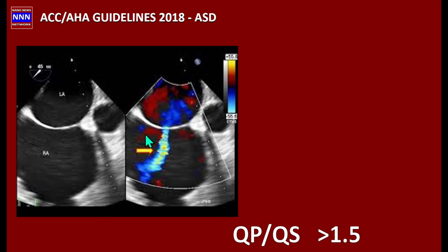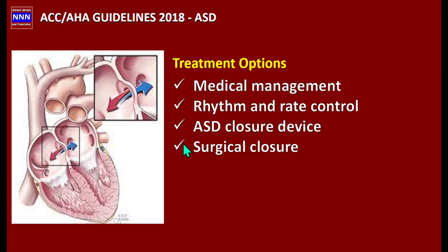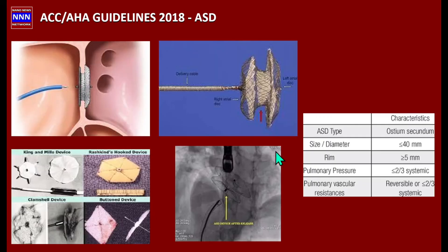Once we have this information — the Qp:Qs ratio and shunt velocity — the available treatment options include medical management (rate and rhythm control for atrial fibrillation, heart failure control, pulmonary hypertension management) and atrial septal defect closure by device or by surgical closure.